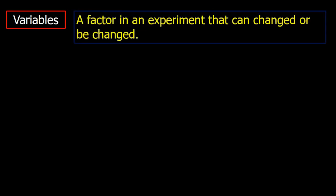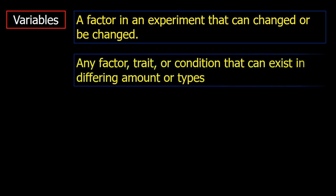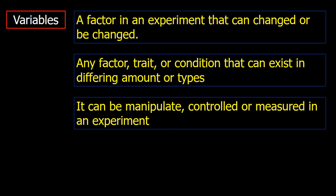Let's define the word variable. A variable is a factor in an experiment that can change or can be changed. It's any factor, trait, or condition that can exist in differing amounts or types. Variables can be manipulated, controlled, or measured in an experiment. In other words, a variable is an important element in your science experimentation — it is actually what experiments are made of.